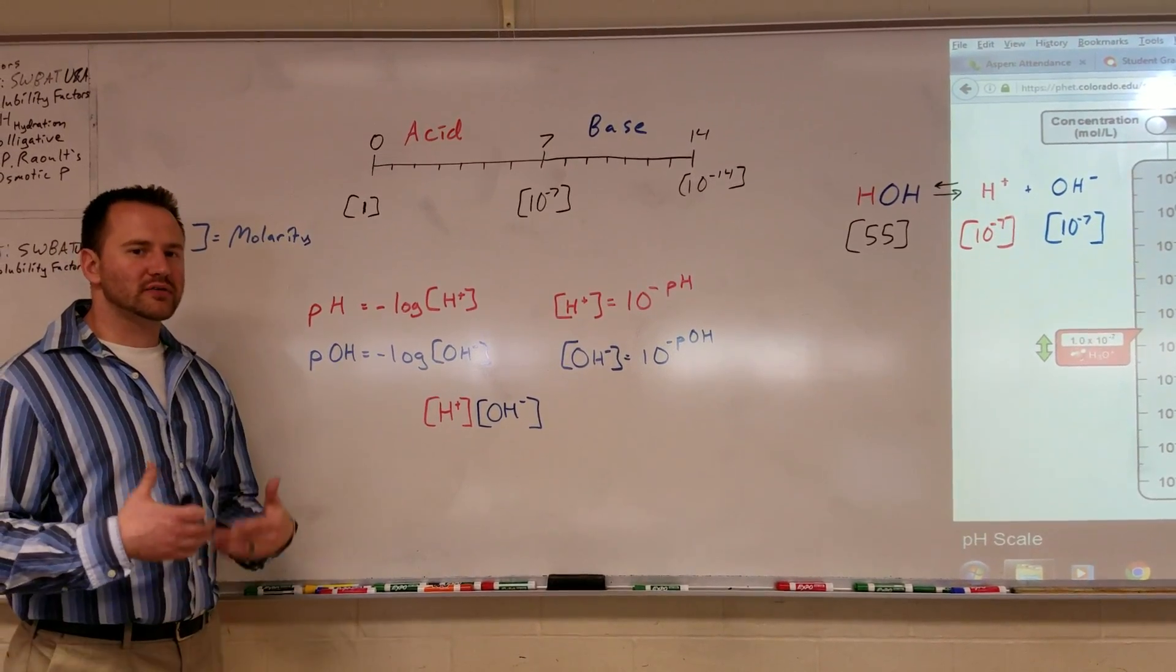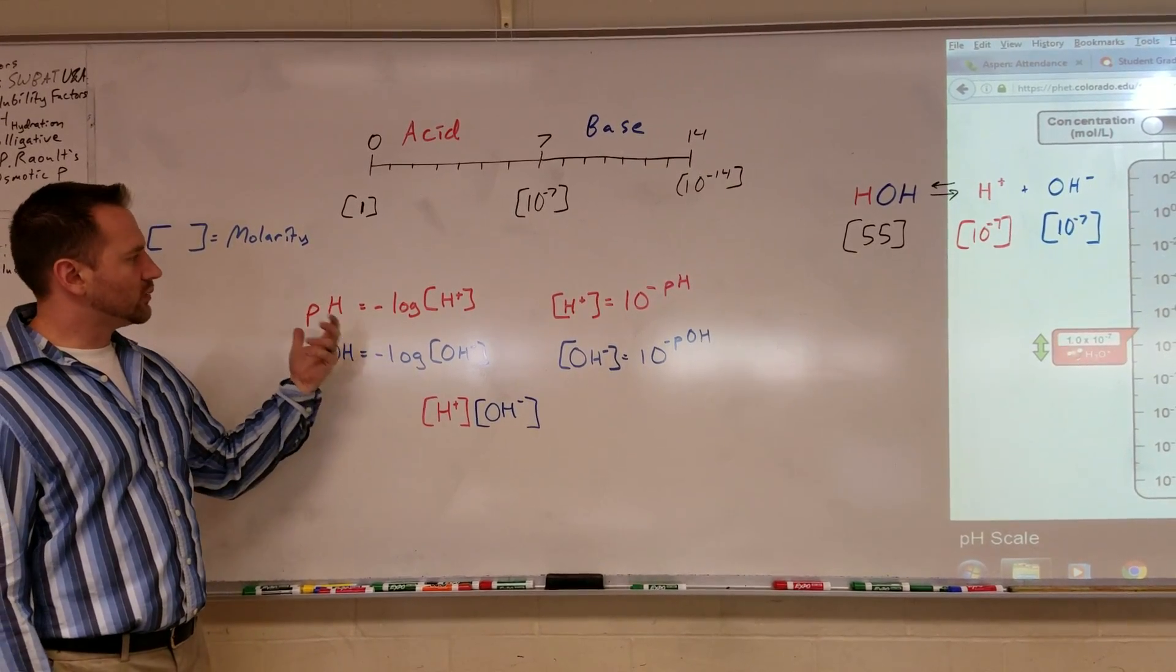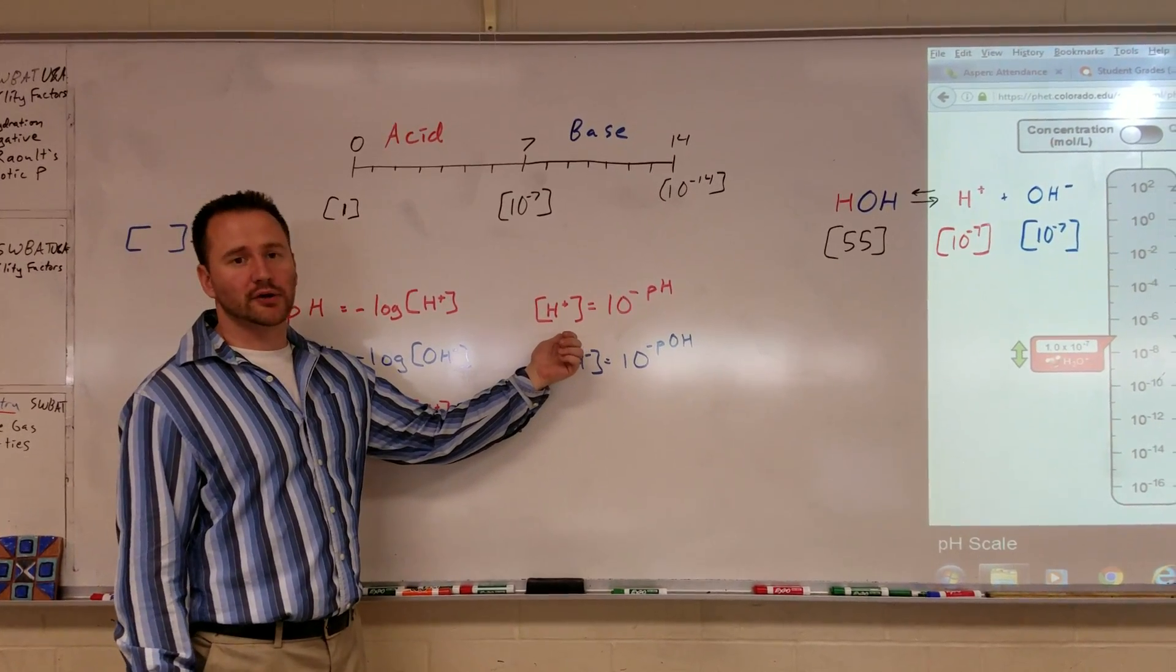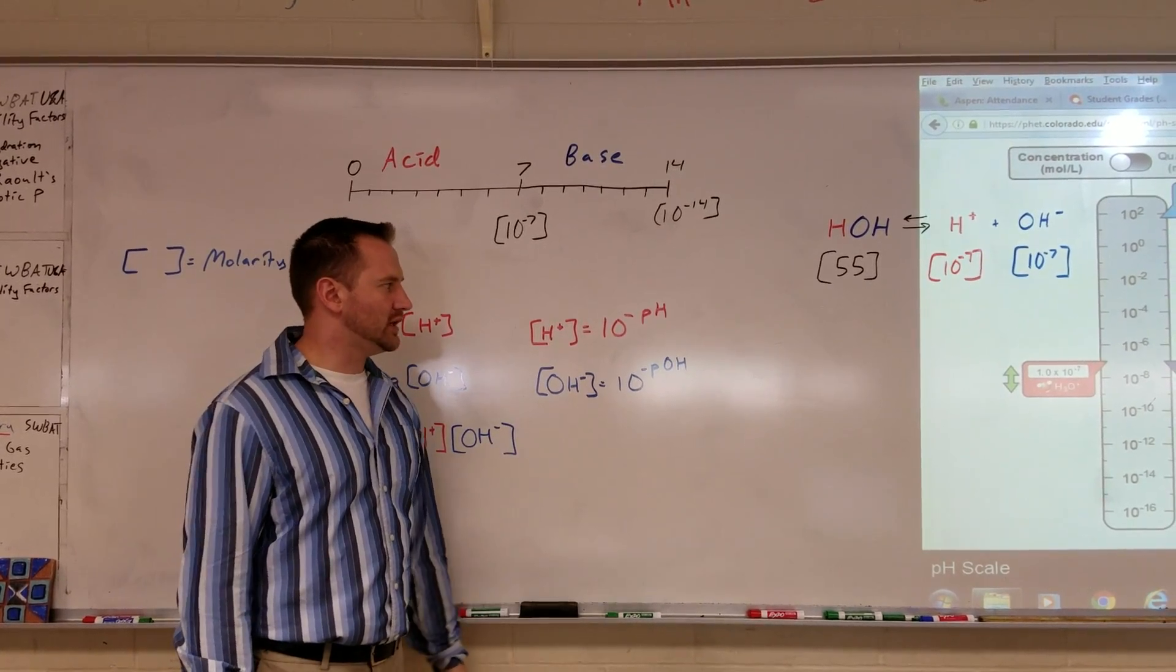If you want to think of logs, think of them as meaning 10 to the something. Additionally, if we know the pH of a solution, we can calculate the hydrogen ion concentration by taking 10 to the negative pH.